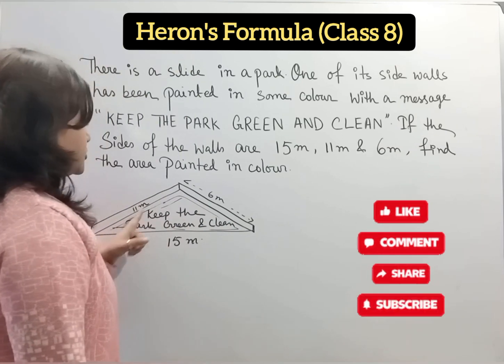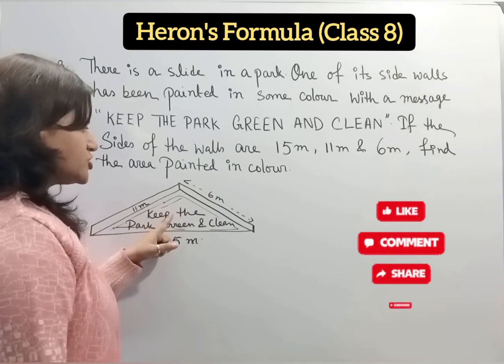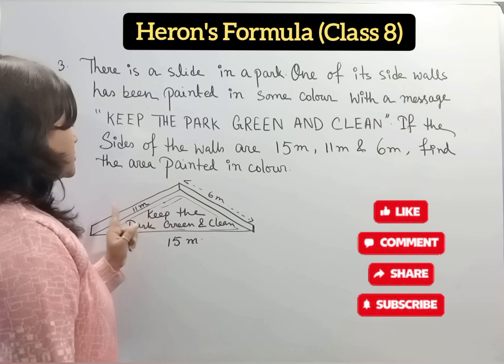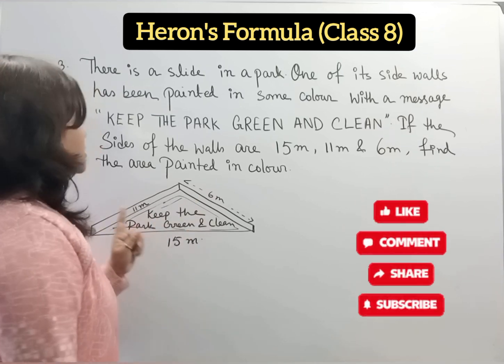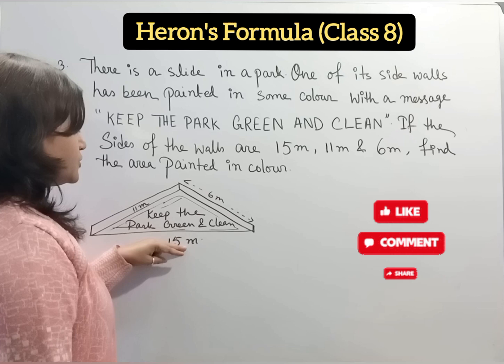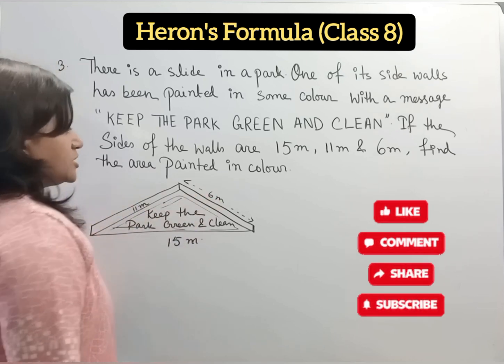Now, three sides are given. It's a triangular shape and it's a scalene triangle because three sides are not equal. So three sides are given: 15 meter, 6 meter and 11 meter.